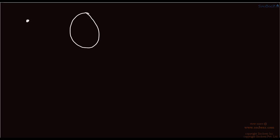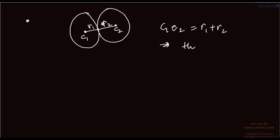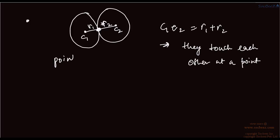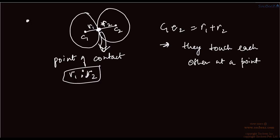The second condition: if c1c2 equals r1 plus r2, the two circles touch each other at a single point externally. This point of contact divides c1c2 in the ratio r1 to r2 internally. Using the section formula, you can calculate the point of contact, or find r1, r2, or the centers if any are given.